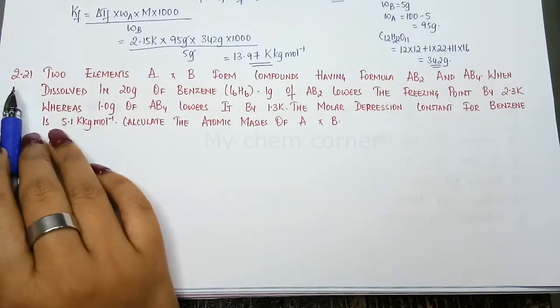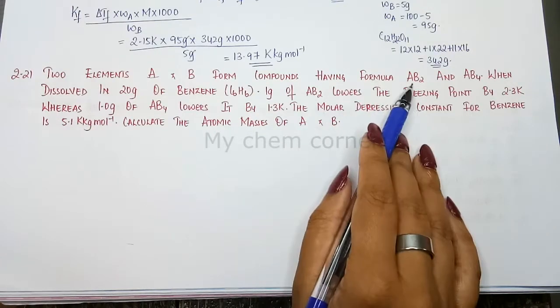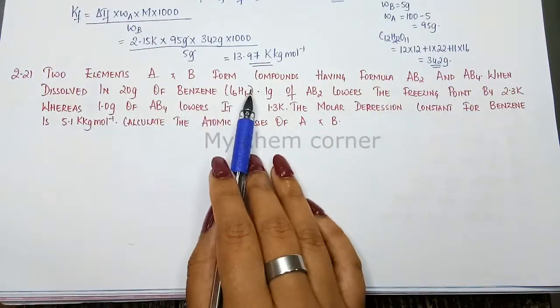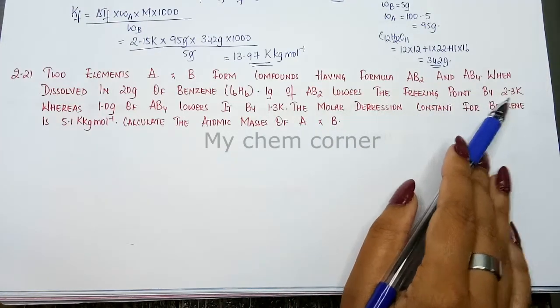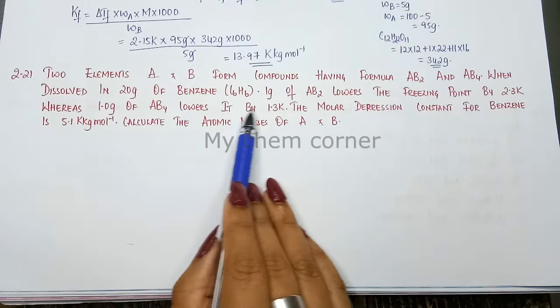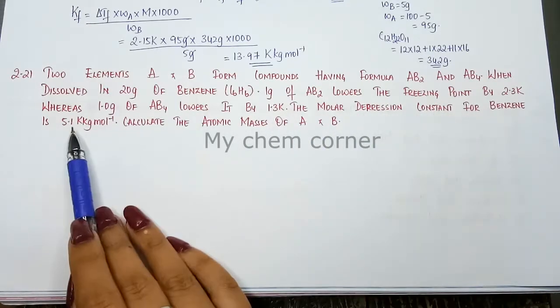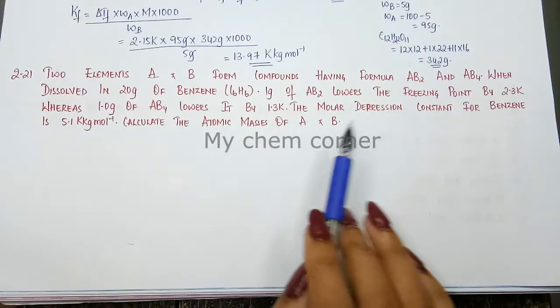Next question is question number 2.21. Two elements A and B form compounds having formula AB2 and AB4. When dissolved in 20 grams of benzene, 1 gram of AB2 lowers the freezing point by 2.3 Kelvin whereas 1 gram of AB4 lowers it by 1.3 Kelvin. The molar depression constant for benzene is 5.1 Kelvin kilogram per mole. Calculate atomic masses of A and B.